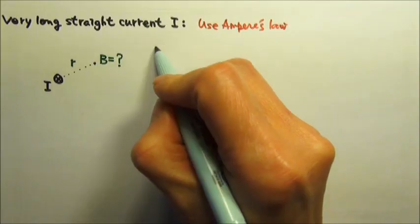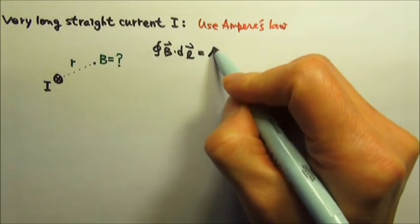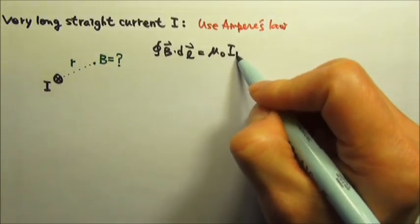Ampere's law says the closed integral of B dot dl equals μ₀ times the enclosed current.